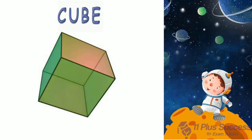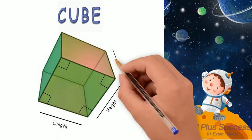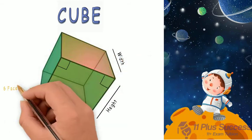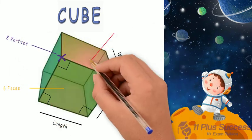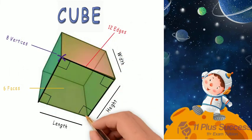Cube. A cube is a 3D shape where all angles are equal. Length equals height equals width. A cube has 6 faces, 8 vertices, and 12 edges, and each face is a square.